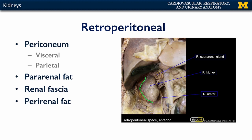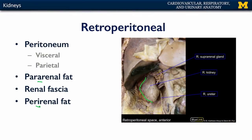Deep to that parietal peritoneum is a variable amount of para-renal fat — para with an A. Deep to that para-renal fat is the renal fascia, sometimes referred to as the perirenal fascia. Deep to that renal fascia is the perirenal fat — with an I, to remember it's on the inside of the fascia. That perirenal fat encases the kidney and holds it firm within the perirenal gutter, and it can sometimes even invade the hilum, posing no real harm. So the layers surrounding the kidney anteriorly are: parietal peritoneum, then para-renal fat, then renal fascia, then perirenal fat. That covers the anatomy of these dynamic filters and how they relate to structures in the abdominal cavity.